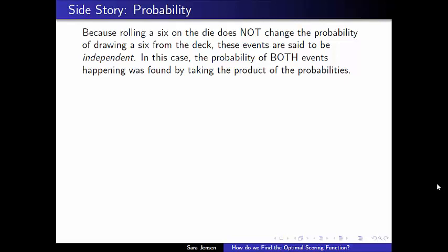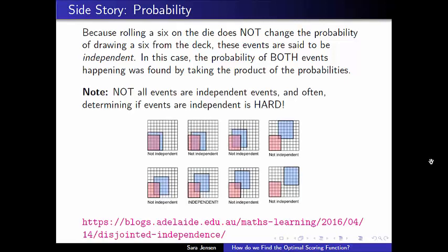Now, in reality, the notion of independent events is very, very difficult. And it's often hard for mathematicians to determine whether or not events are independent. And there's actually a more formal definition than what I provided here for you on what it means for events to be independent. And there's actually a beautiful blog post that I just came across, which I put the link to down here in the slides. And one of these visuals that's available on the website, it shows just how difficult it is for events at random to be independent.